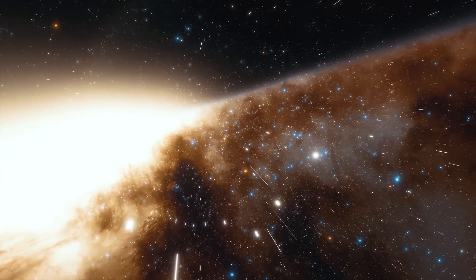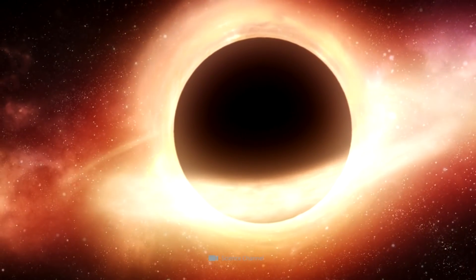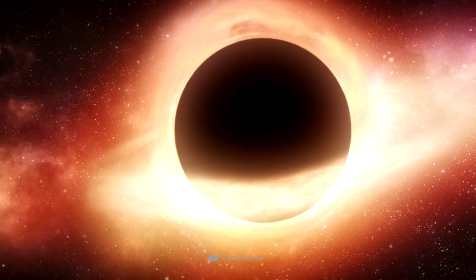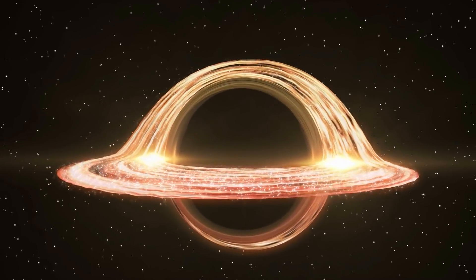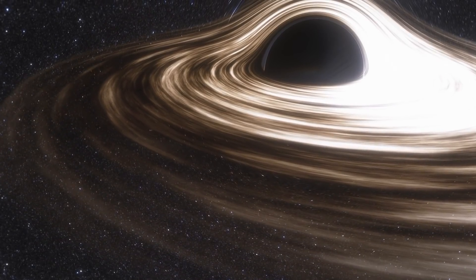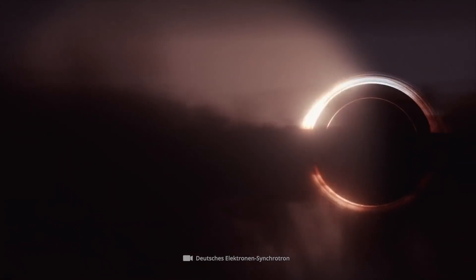This is a characteristic that cannot be transferred to the properties of black holes, because in fact, the gravity monsters do not emit any light at all. The light that radiates around the black hole is therefore caused by the accretion disk around the massive structure.